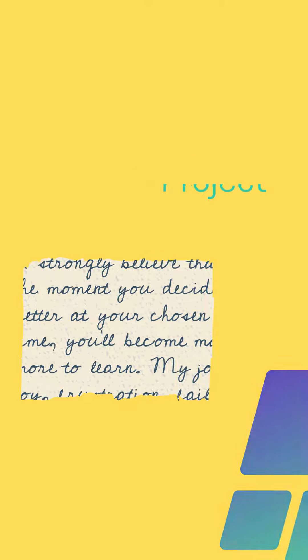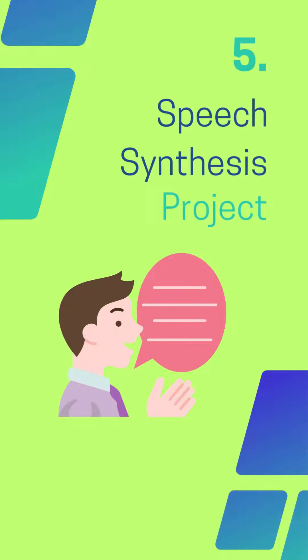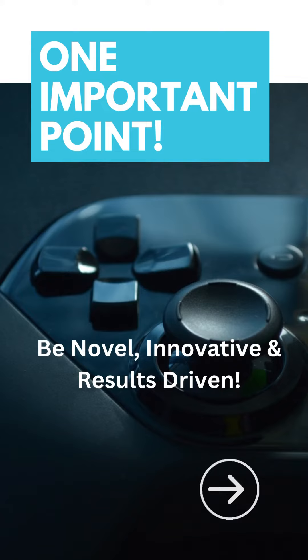Number five is speech recognition systems or speech synthesis. This is basically used for detecting speech — you can detect emotions in speech, translate audio, convert speech to text, and so on.